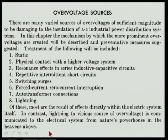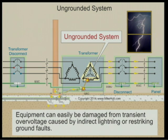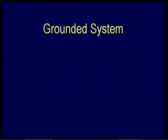Treatment of the following will be included: static electricity — you need to ground that; physical contact with a higher voltage line; resonant effect with series inductive capacity circuits; repeating intermittent short circuits — that's the re-striking ground faults; switching surges; forced zero current interrupting. I have no clue what most of that is talking about because it's the problems associated with ungrounded systems. We started the industry with ungrounded systems and got a lot of problems with overvoltage. So Beeman suggests you need to go to a grounded system.